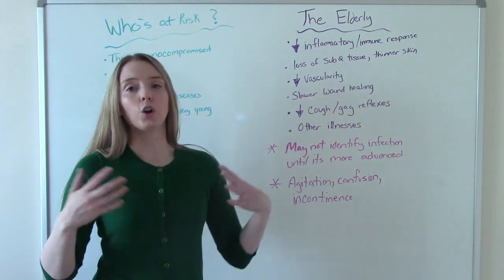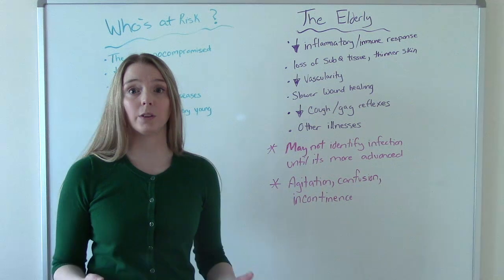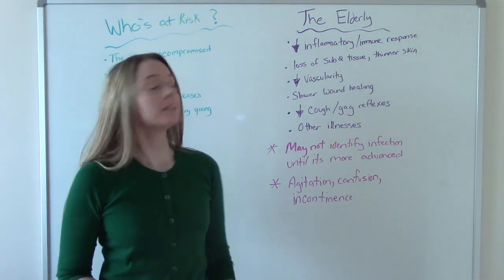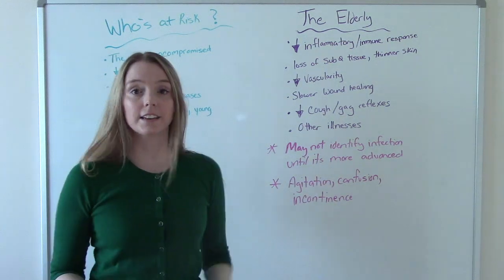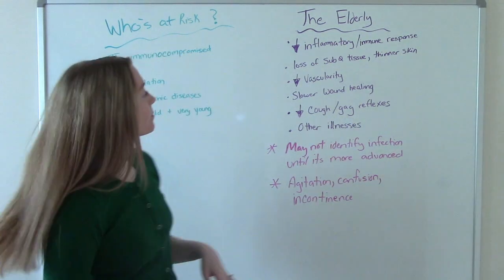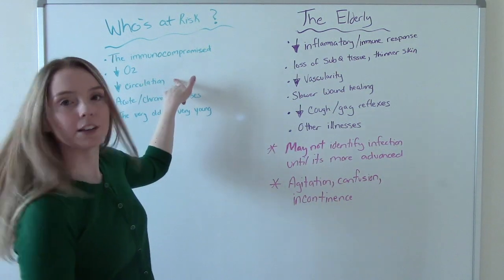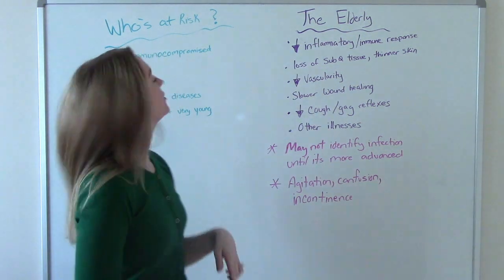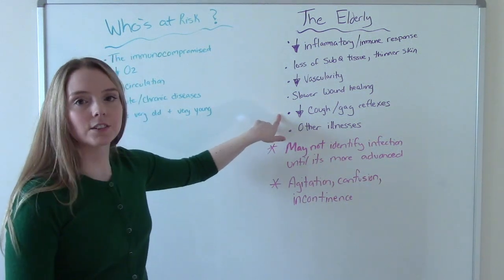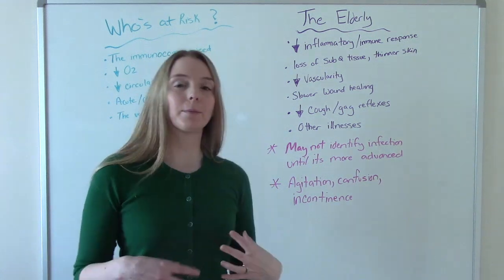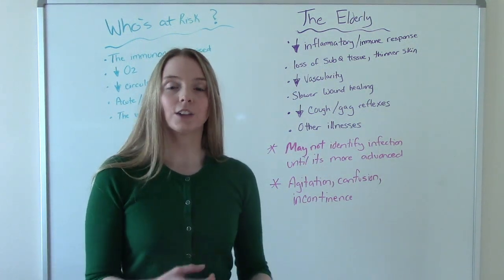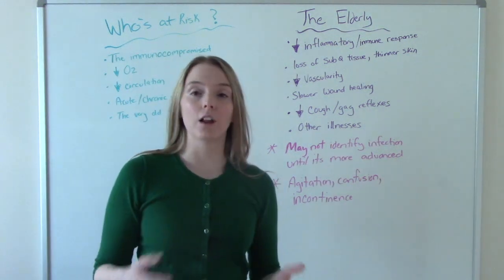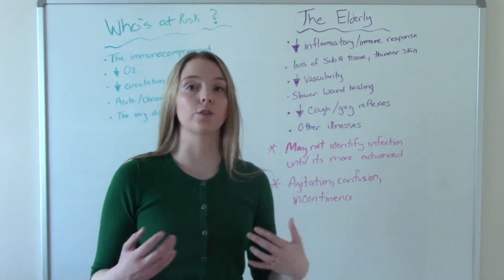So what's going on with the elderly and the normal aging process that makes them more susceptible to infection? Well, a lot of things. First, they have decreased inflammatory and immune responses. There's a loss of subcutaneous tissue and their skin is thinner, so those defense mechanisms are kind of impaired. There's a decrease in vascularity, a decrease in circulation. They have slower wound healing as a result of all these things. They have a decreased cough and gag reflex. I'm not saying elderly people can't cough or gag, but maybe not as strong as when they were younger, so it's harder for them to get that stuff out. And then they have other illnesses going on - comorbidities. The older you are, the more likely you are to have some other sort of chronic disease.